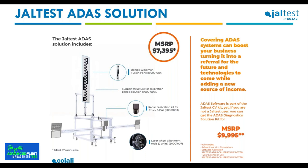To summarize: if you are already using JALTES, your MSRP is $7,395 and the ADAS coverage for commercial vehicles software is included. If you are not yet using JALTES, you have the option to get the hardware, software, license, and the full JALTES ADAS solution — the portable frame with panels, radar calibration kit, and laser wheel alignment tools. The solution will be available to order in the next few weeks.